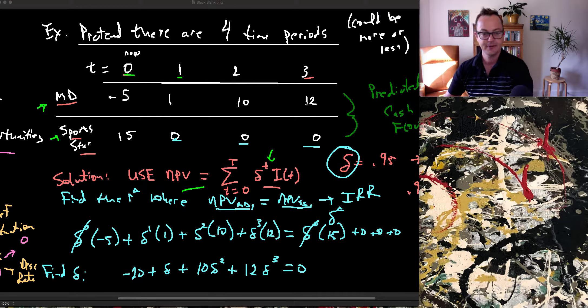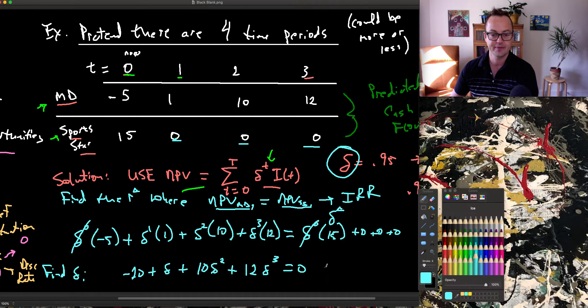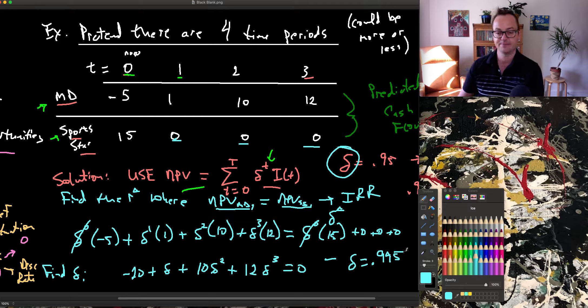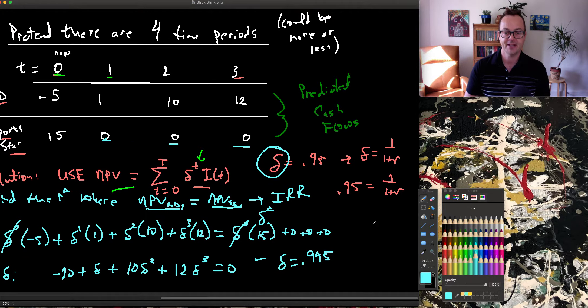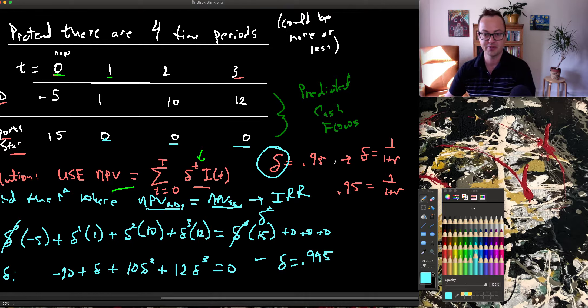So solving for delta gives me delta is equal to 0.945. So let's go back over here and solve for, that's very close to what I had before. So remember, delta is equal to 1 over 1 plus r. Let's change it, 0.945 is equal to 1 over 1 plus r.